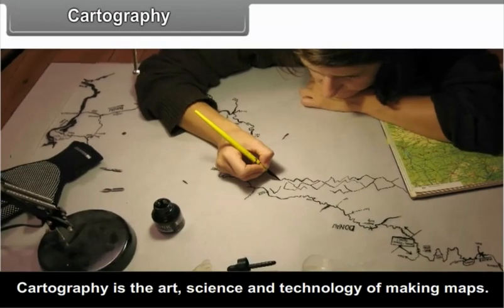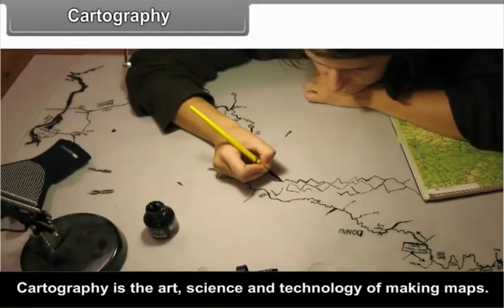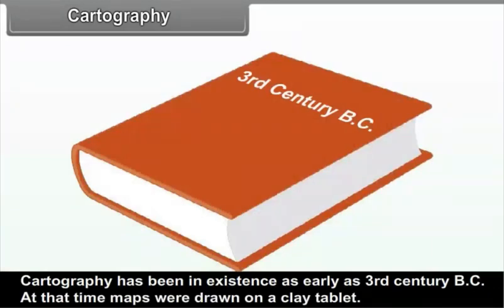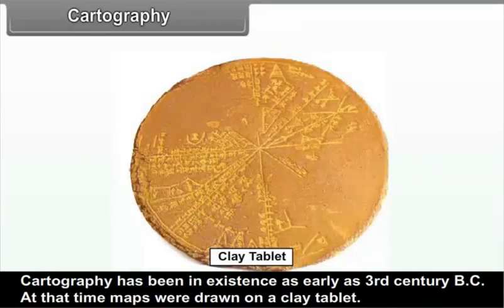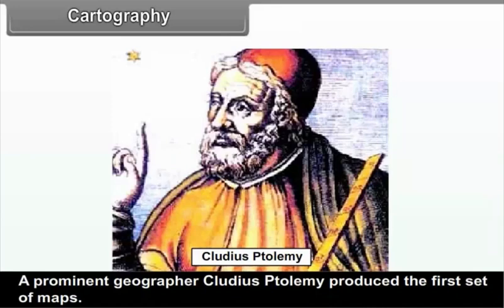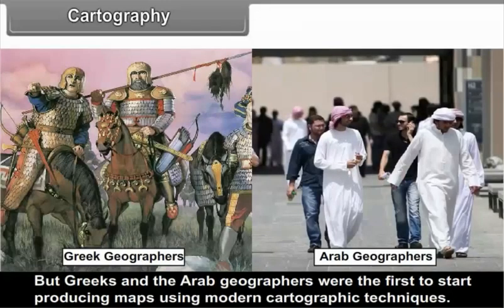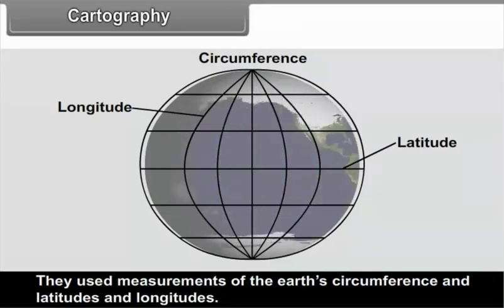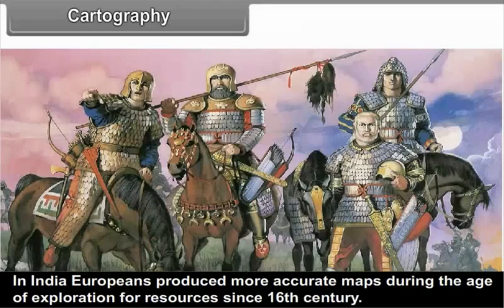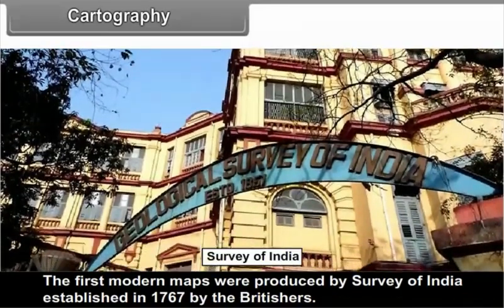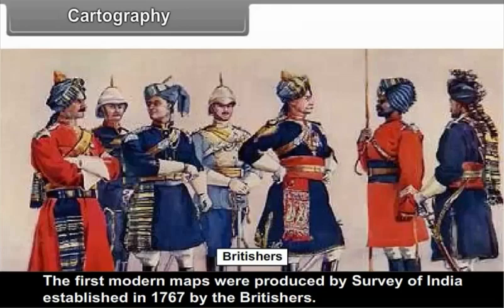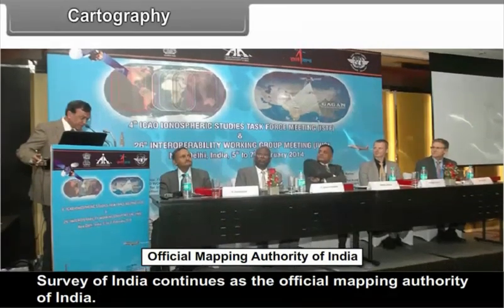9.1 Cartography: Cartography is the art, science, and technology of making maps, and has been in existence since the 3rd century BC, when maps were drawn on clay tablets. Claudius Ptolemy produced the first set of maps, but Greeks and Arab geographers were first to use modern cartographic techniques including measurements of the earth's circumference, latitudes, and longitudes. In India, Europeans produced more accurate maps during the age of exploration since the 16th century. The first modern maps were produced by the Survey of India, established in 1767 by the British, and it continues as the official mapping authority of India.